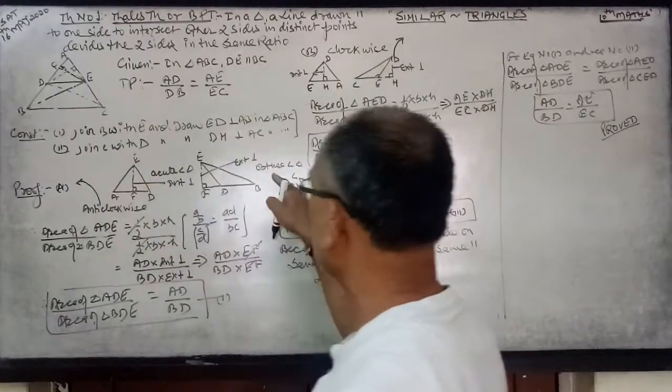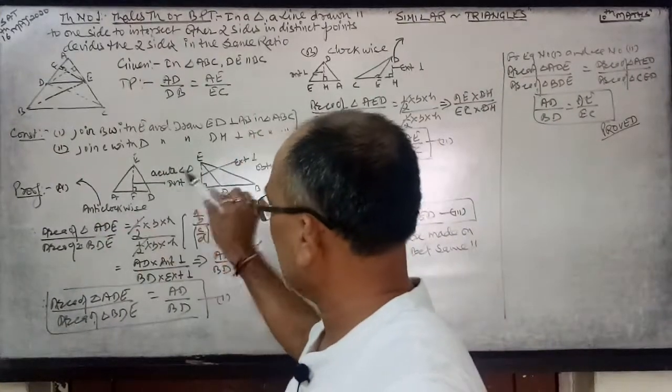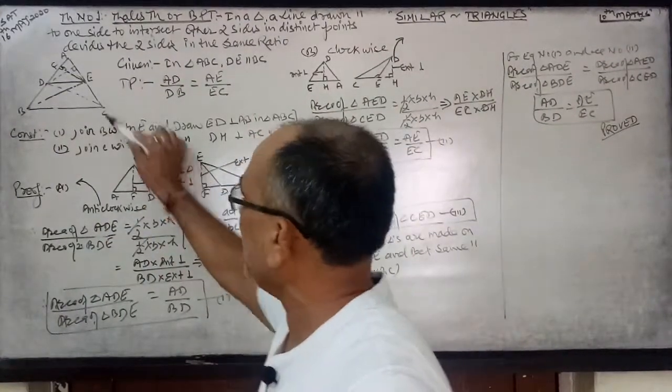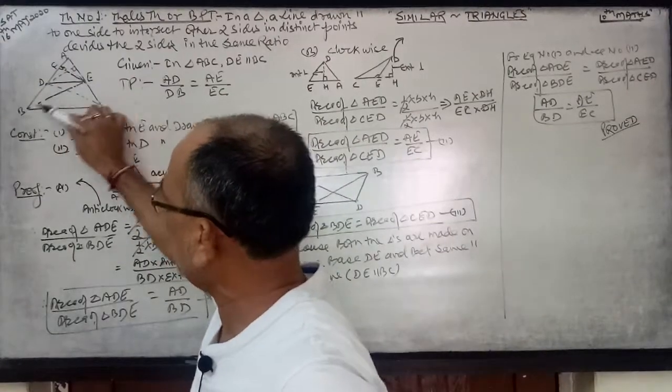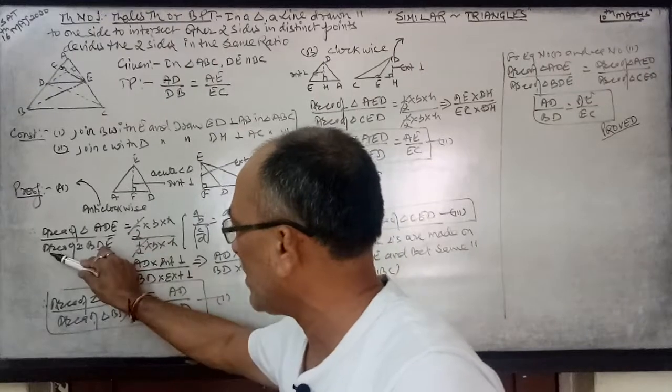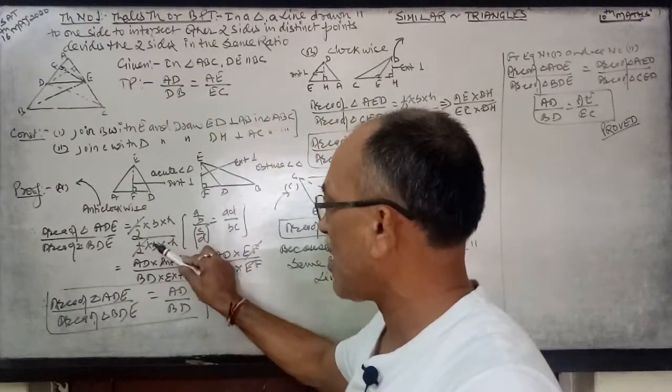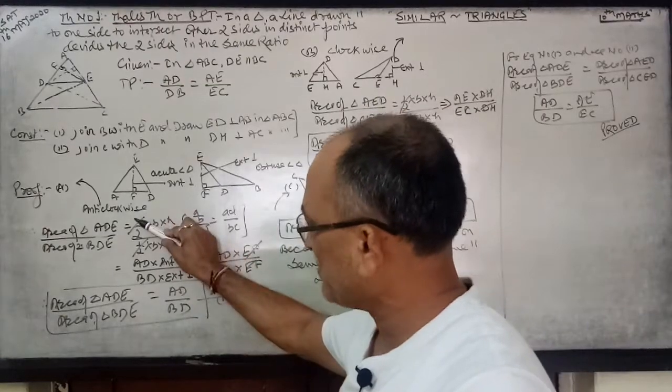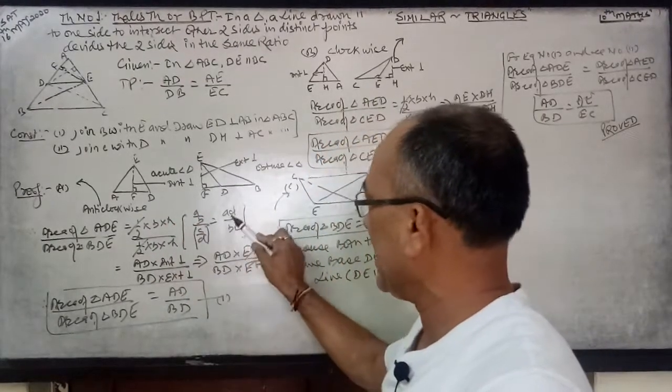This is acute angle triangle and this obtuse angle triangle. So now I am taking area of triangle ADE over area of triangle BDE, which is half into base into height over half into base into height. First partition by second, by third by fourth. So now AD will go up, AD by BD.